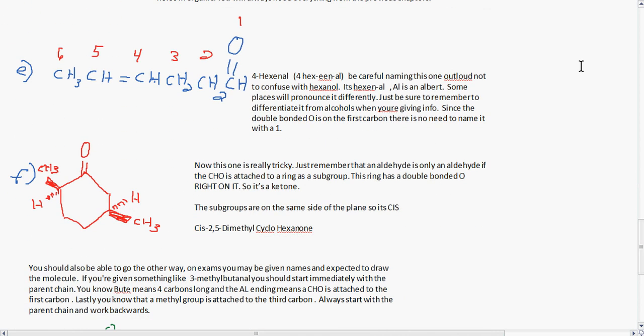Letter E is 4-hexenal. Be careful naming this one out loud not to confuse it with hexenol. It's hexen-al, al as in albert. Some places will pronounce it differently, and that really doesn't matter, just be sure to differentiate it from the alcohols. Since the double bonded O is on the first carbon, there is no need to name it with a 1.